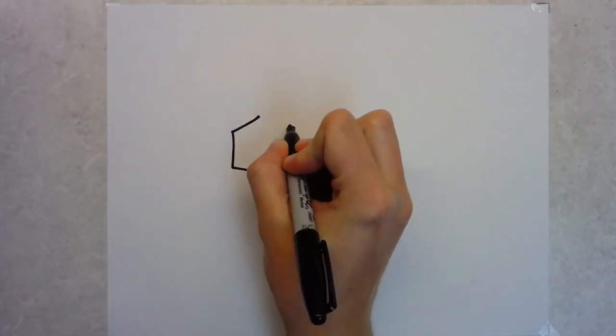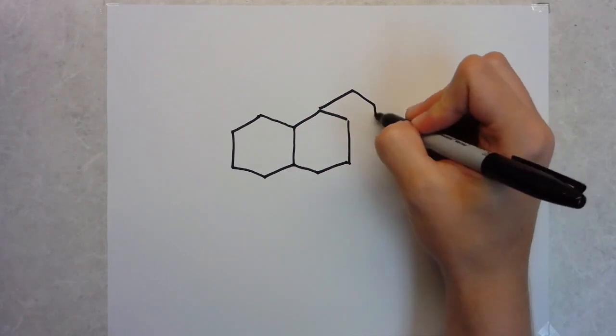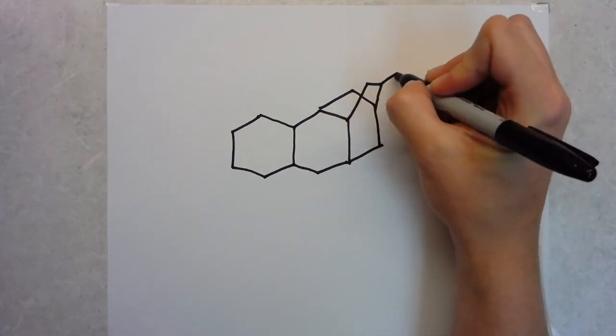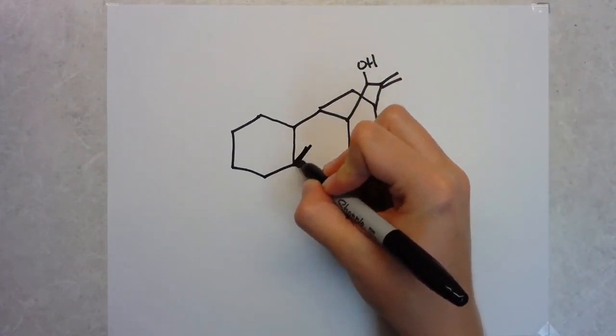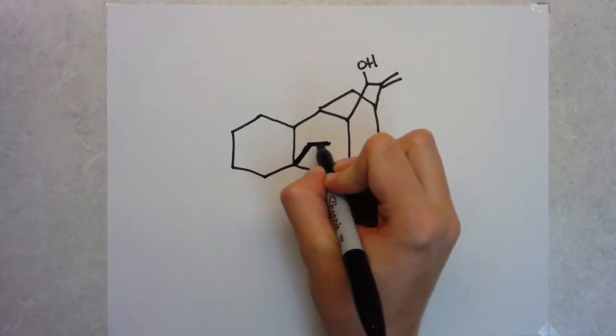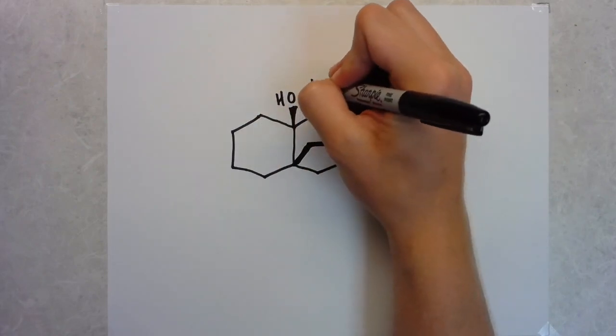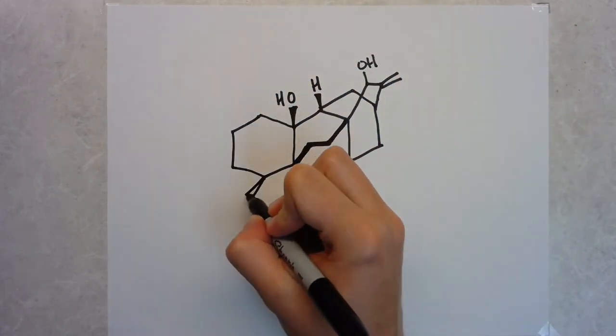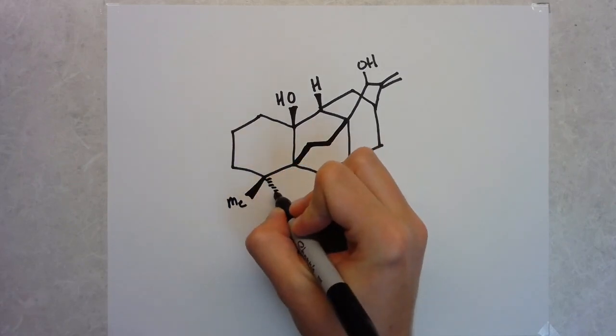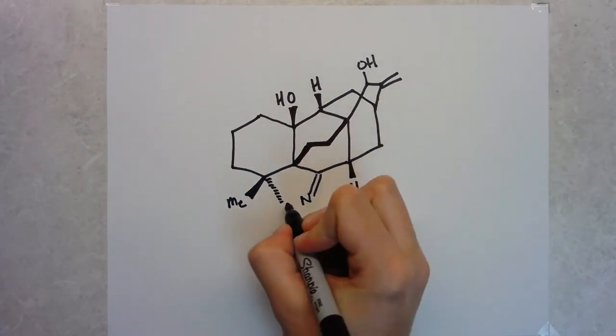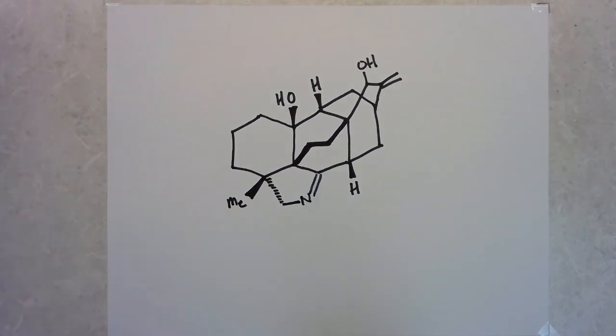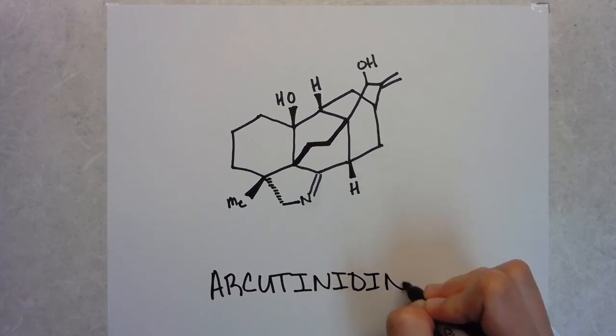So today we're going to go over the total synthesis of arcutinidine. You might have seen that in JACS recently they published two papers synthesizing this molecule from the groups of Ong Li and Richmond-Sarpong. And looking back about a month ago, the Chin group also published a synthesis of this molecule. So today we're going to focus on the Ong Li synthesis, but we're going to compare and contrast all three methods. Arcutinidine, along with a few other of its derivatives, is a diterpenoid alkaloid.